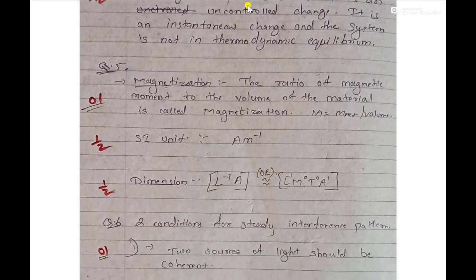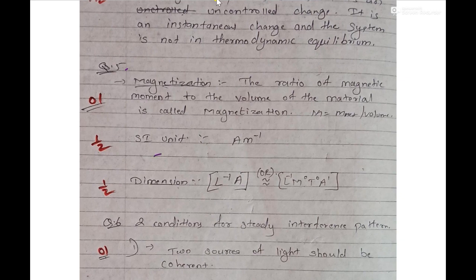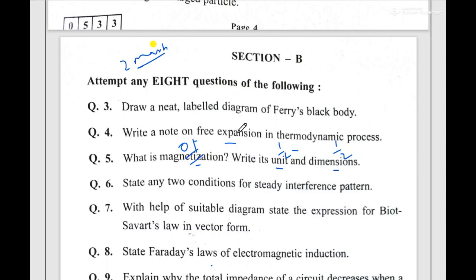Question number five is about magnetization, its units and dimensions. For the unit it will be half a mark, for dimensions half a mark, and for magnetization definition it will be one mark. You have to write the definition of magnetization — that carries one mark — then the SI unit, which you can write in either of two correct formats. So over here the questions ask you to write this in the manner I have shown.